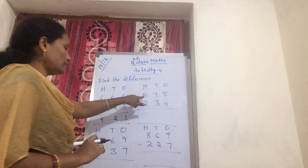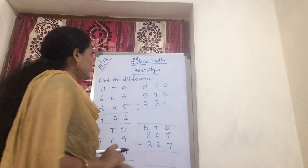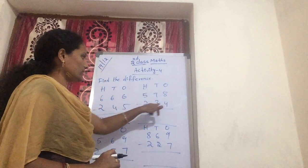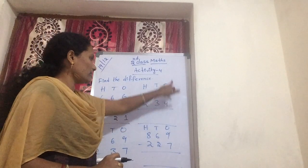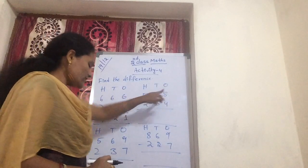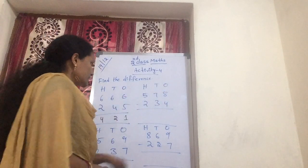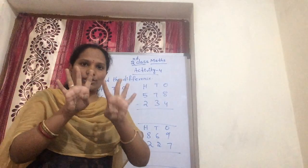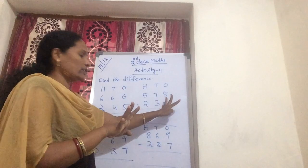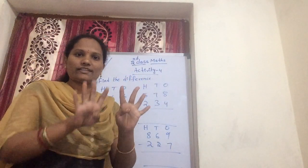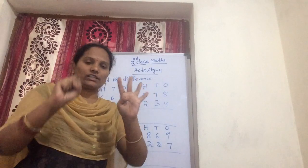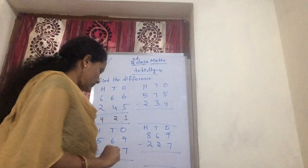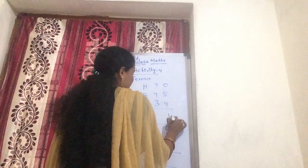First read the problem: 575 minus 234. Coming from ones. In ones, first number is 5. Now show 5 on your fingers. Now how many are removing? 4 fingers are removing. Still here, get how many fingers? 1 finger. This 1 is kept in ones.